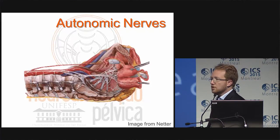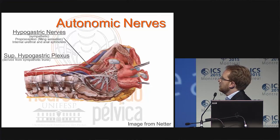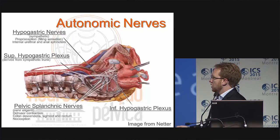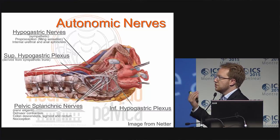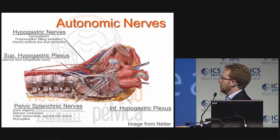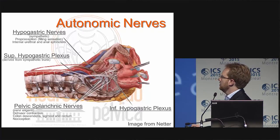We also have the autonomic nerves — all of those previously mentioned were somatic nerves. The hypogastric nerves carry proprioceptive signals from the bladder and innervate the internal urethral and anal sphincter with sympathetic innervation. They derive from the superior hypogastric plexus and merge with the pelvic splanchnic nerves to form the inferior hypogastric plexus. The pelvic splanchnic nerves — nervi erigentes — carry parasympathetic signals and derive from S2, S3, and S4 before crossing over the internal iliac vessels. They innervate the detrusor as the sole motor innervation, provide extrinsic innervation of the descending colon, sigmoid, and rectum, and carry bladder nociceptive signals.